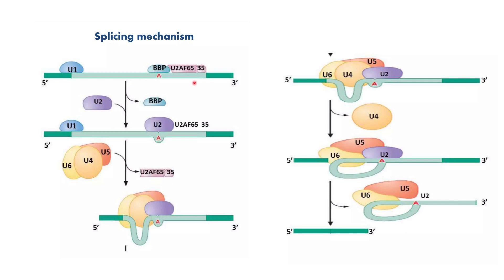In the splicing mechanism overview, the snRNP proteins bind to the exon-intron junctions, bring the junctions closer, cleave off the introns, and stitch the exons together to form a mature mRNA transcript.